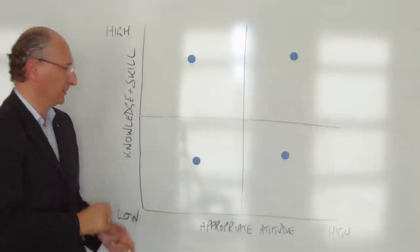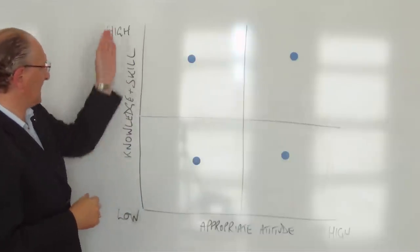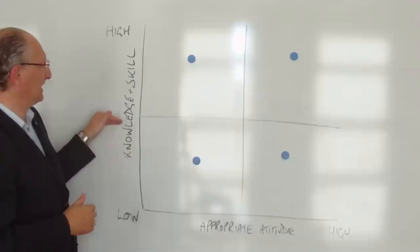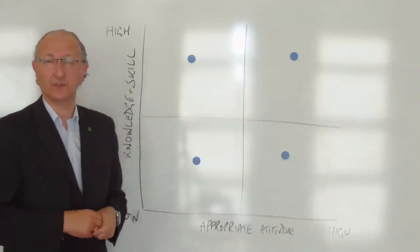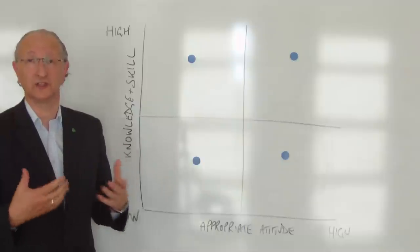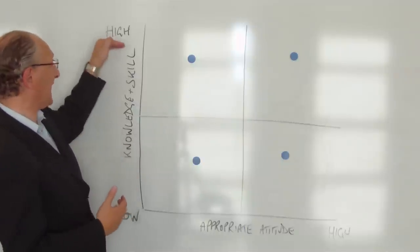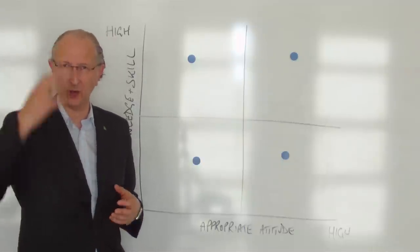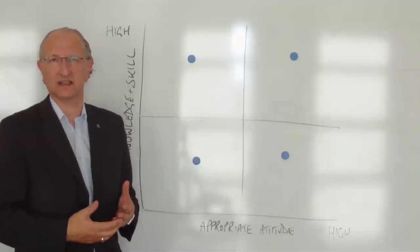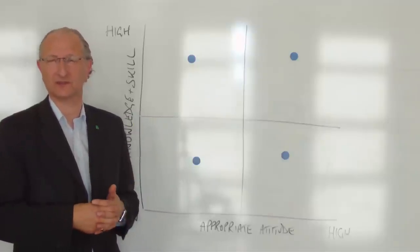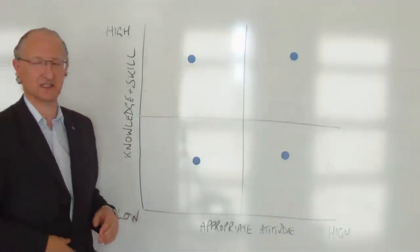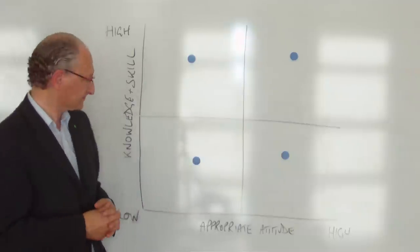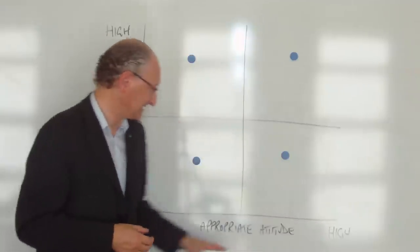Now what we've got here is a simple graph. On this axis it looks at the level of knowledge and skill that the person has in order to do the job. High knowledge and skill would mean they've got everything they need to know and all the physical skills and abilities to fulfill that function. If they have low knowledge and skill, then they wouldn't. That's this axis.